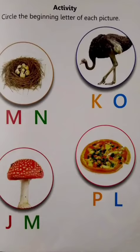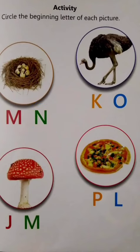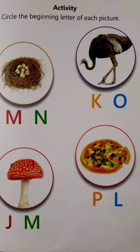Okay, we circle the beginning letter of each picture. First picture — may have nest, or nest kis se shuru hota pata hai na aapko — N for nest, so we circle the capital letter N. Now the next picture, next picture may ye kya hai, ye bada sa ostrich hai — O for ostrich, circle the capital letter O.